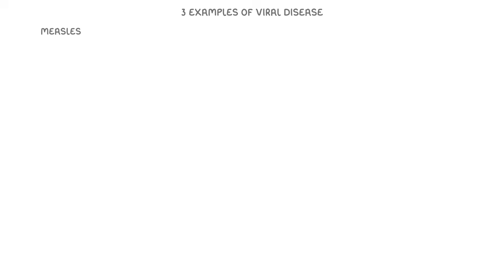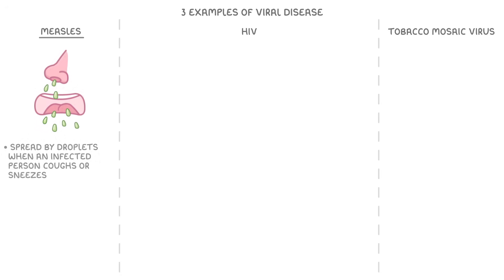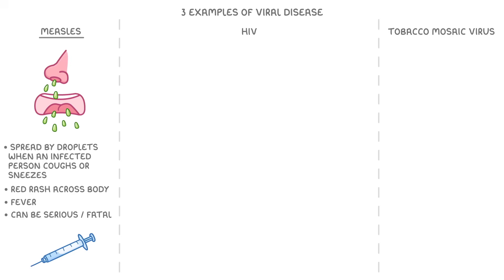The three examples of viral disease that we're going to look at are measles, HIV, and tobacco mosaic virus. The measles virus is spread by droplets when an infected person coughs or sneezes. It generally causes people to develop a red rash across most of their body, and a fever, which is where you get a really high temperature and generally feel unwell. Although it can be really serious, and sometimes even fatal, it's luckily really rare in the UK, as nearly everyone is vaccinated against it when they're young.